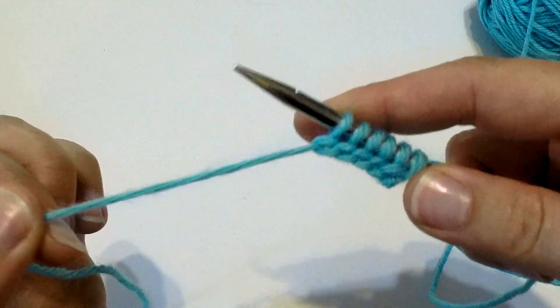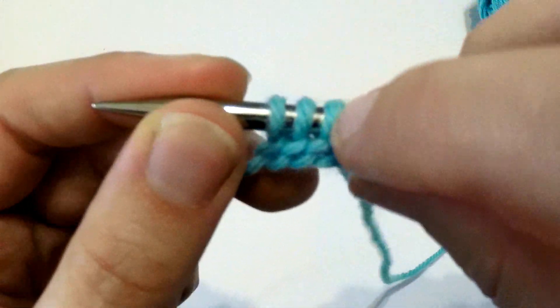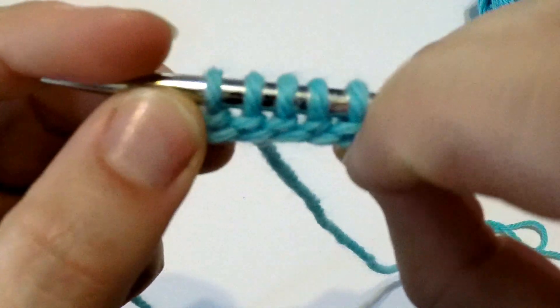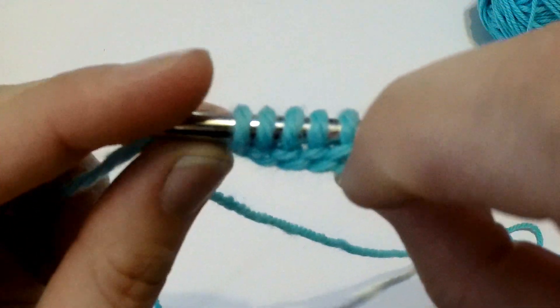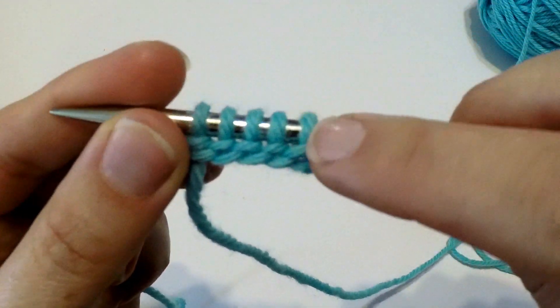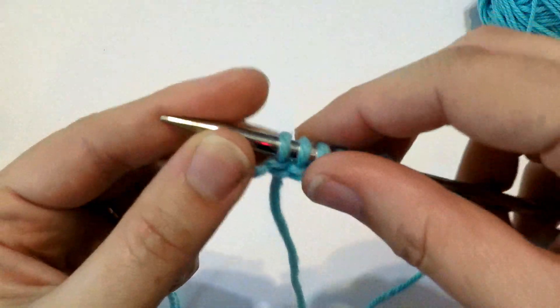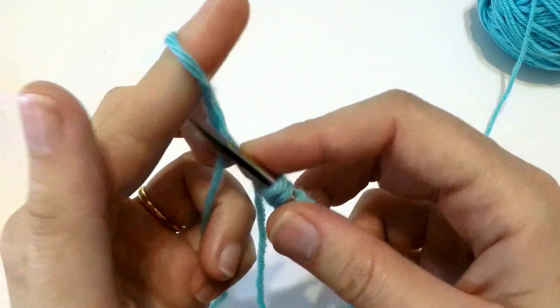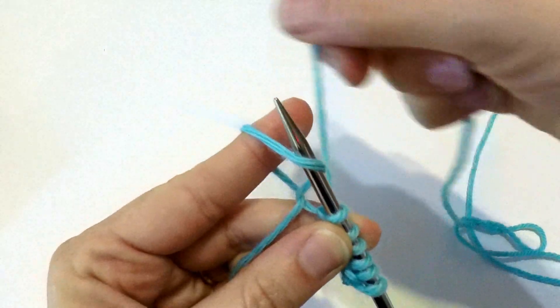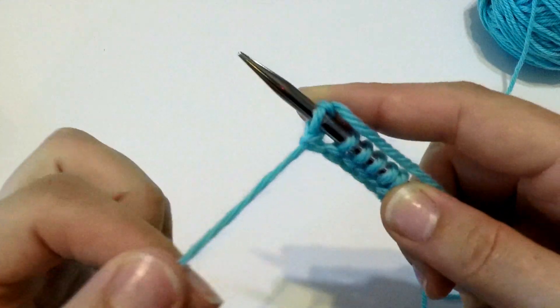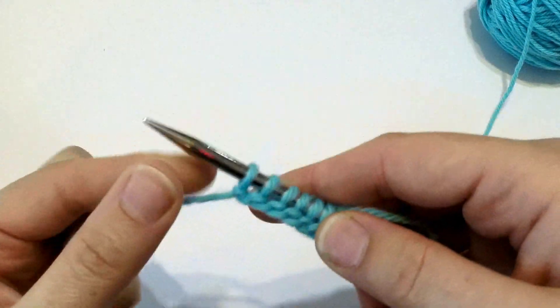There you go. That is that method. It looks just like as if we had done it the continental style, but it's maybe a little more comfortable for the English style knitters. If you found this video useful, then please give it a like, and think about subscribing to my channel for more knitting tips and tricks. Thanks, and I'll see you next time.